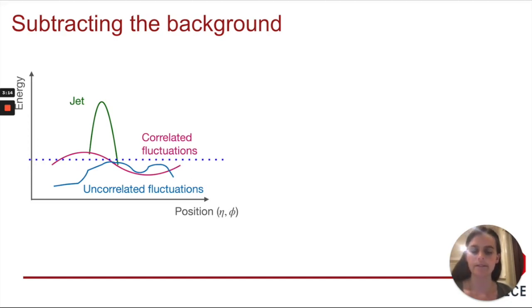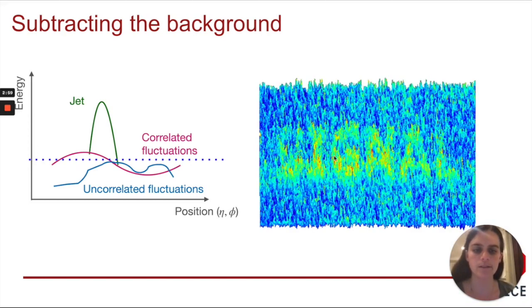For this, we developed a machine learning-based background subtraction. Machine learning is the name given to any algorithm that imitates the way humans learn. This is because humans are naturally quite good at picking out signals from complex backgrounds. For example, you can probably read the word signal in this image here at the right.